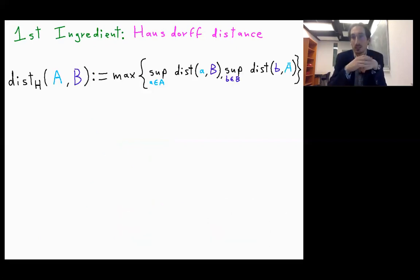So having this in mind, the Hausdorff distance is introduced. So in this distance we have the maximum of two quantities. The first one answers the question, how far are the points of A from B?